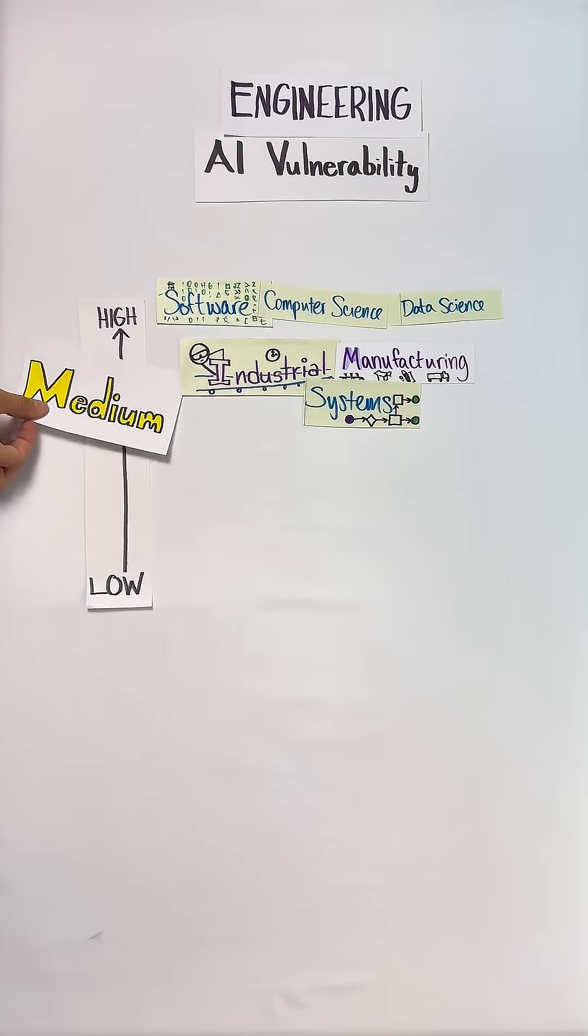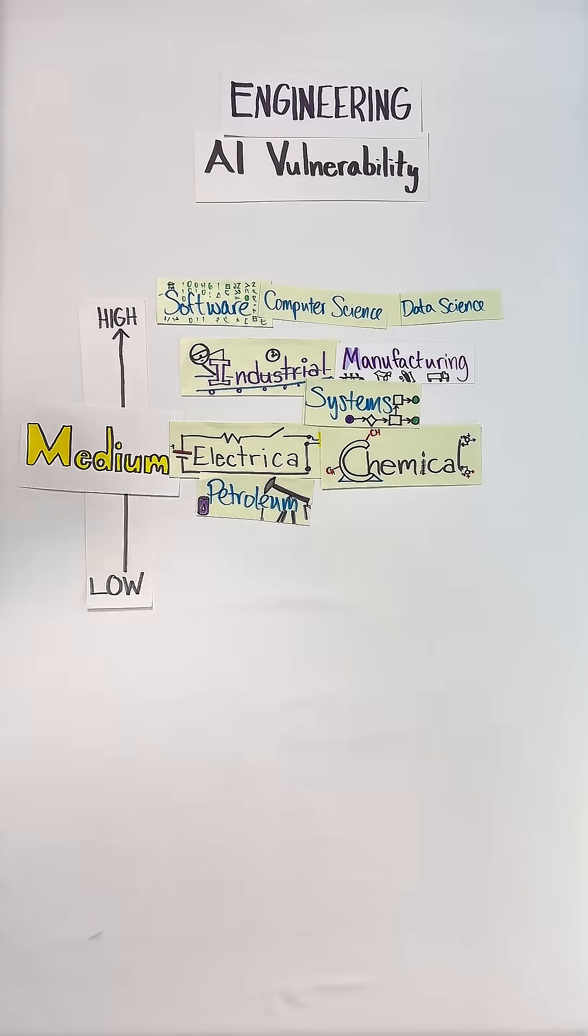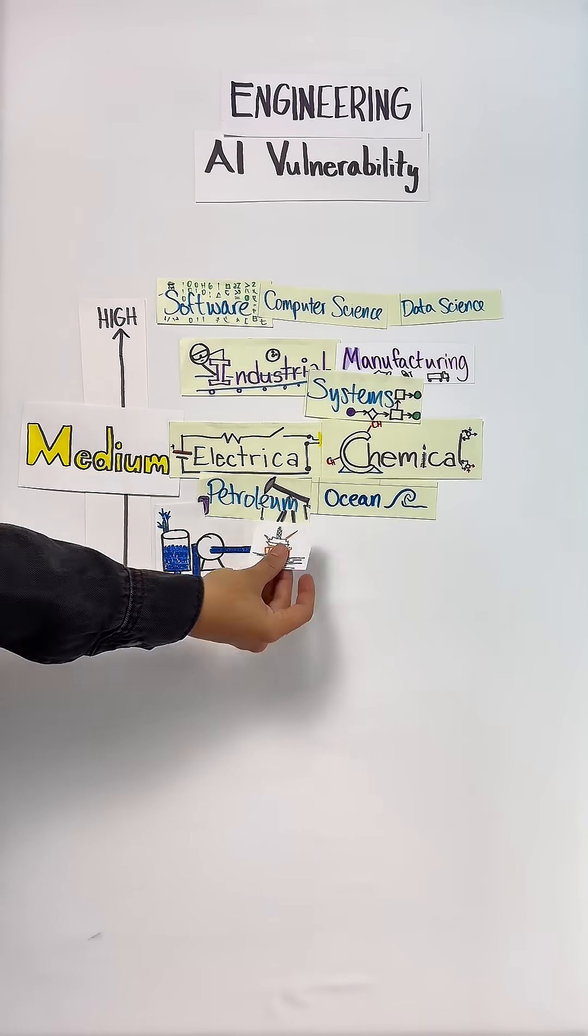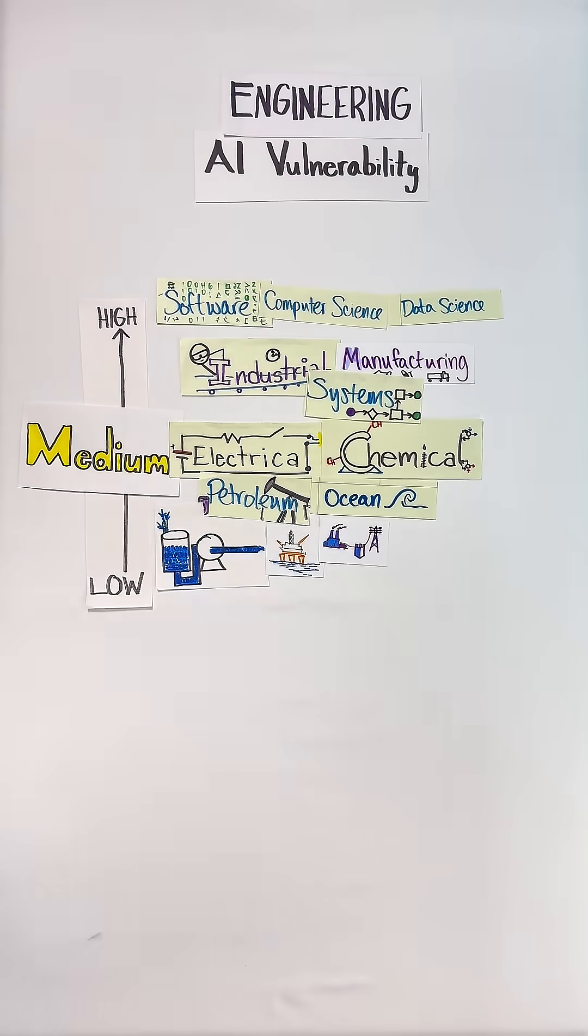At medium risk, fields like electrical, chemical, petroleum, and ocean engineering blend the digital and physical systems in a way that AI can step in and automate the digital as long as they have the right sensors.